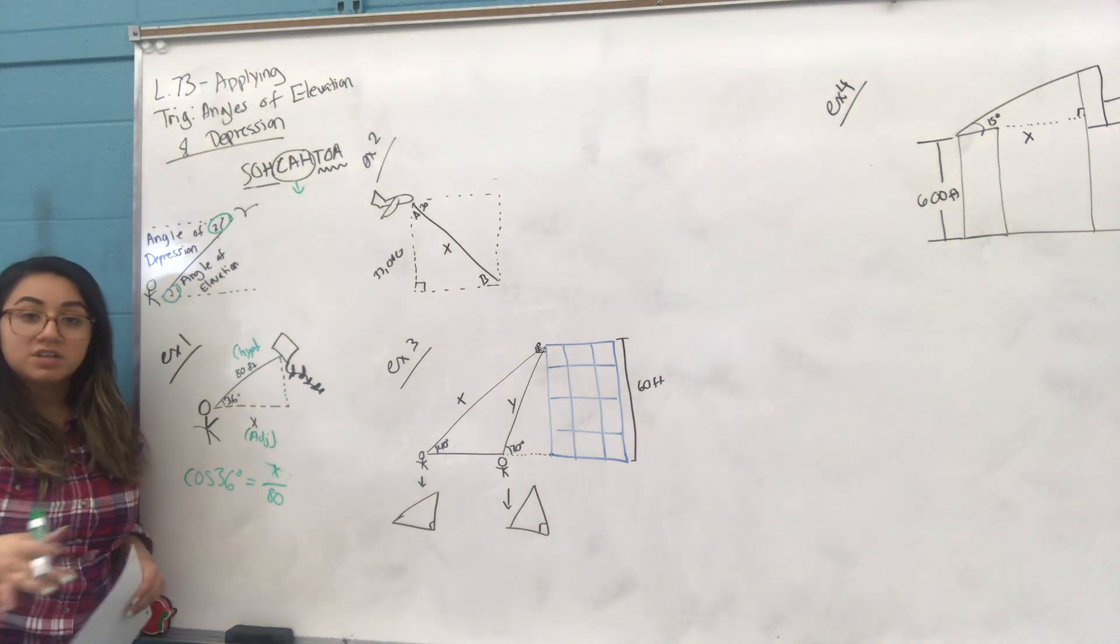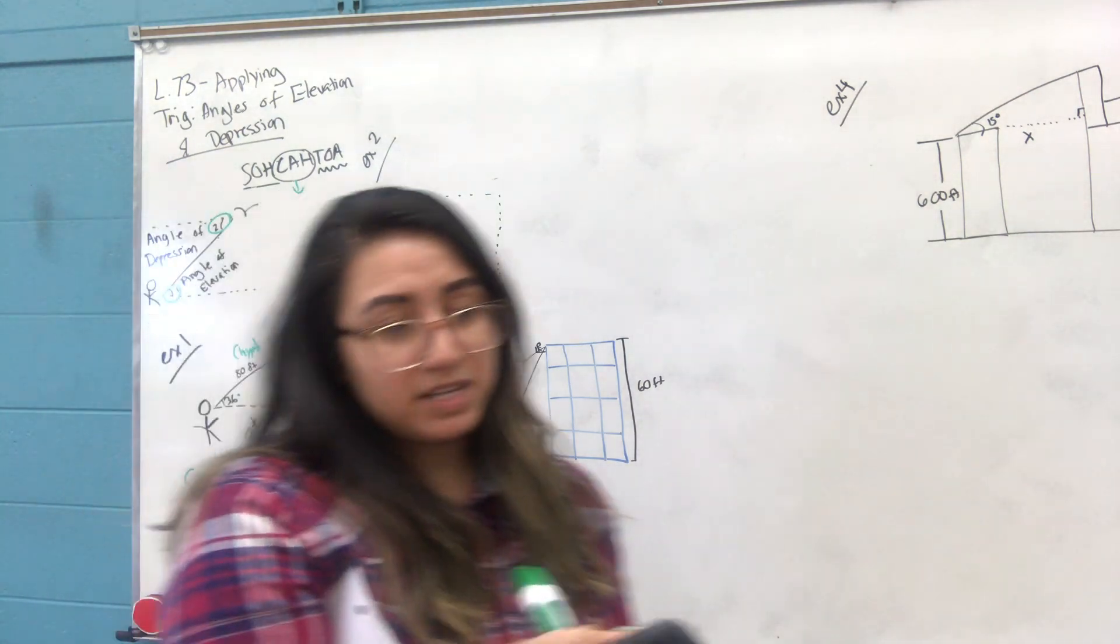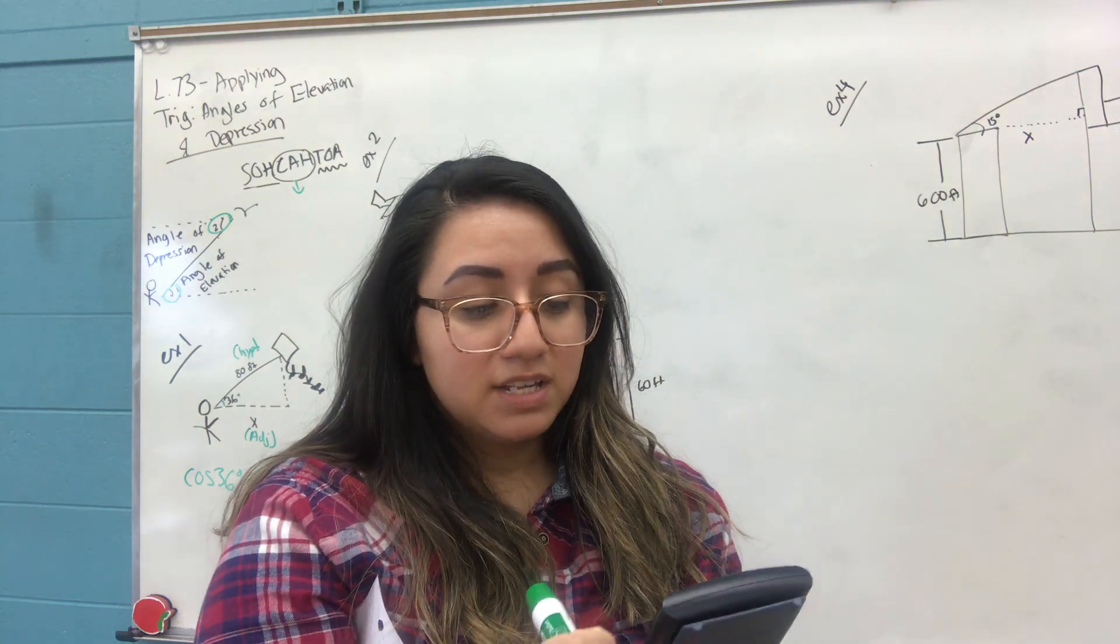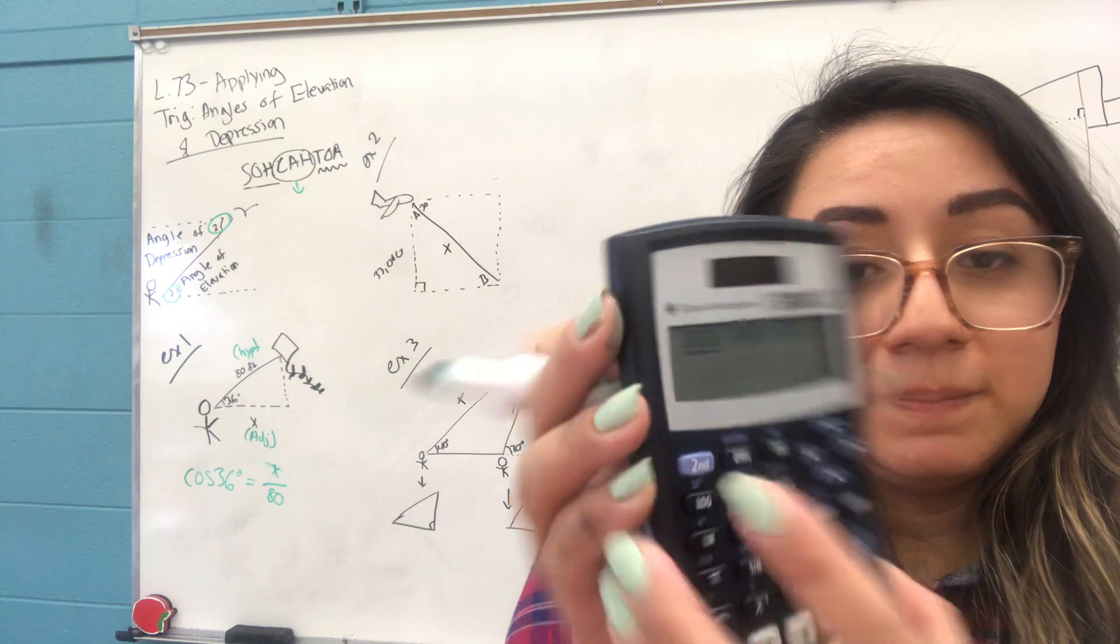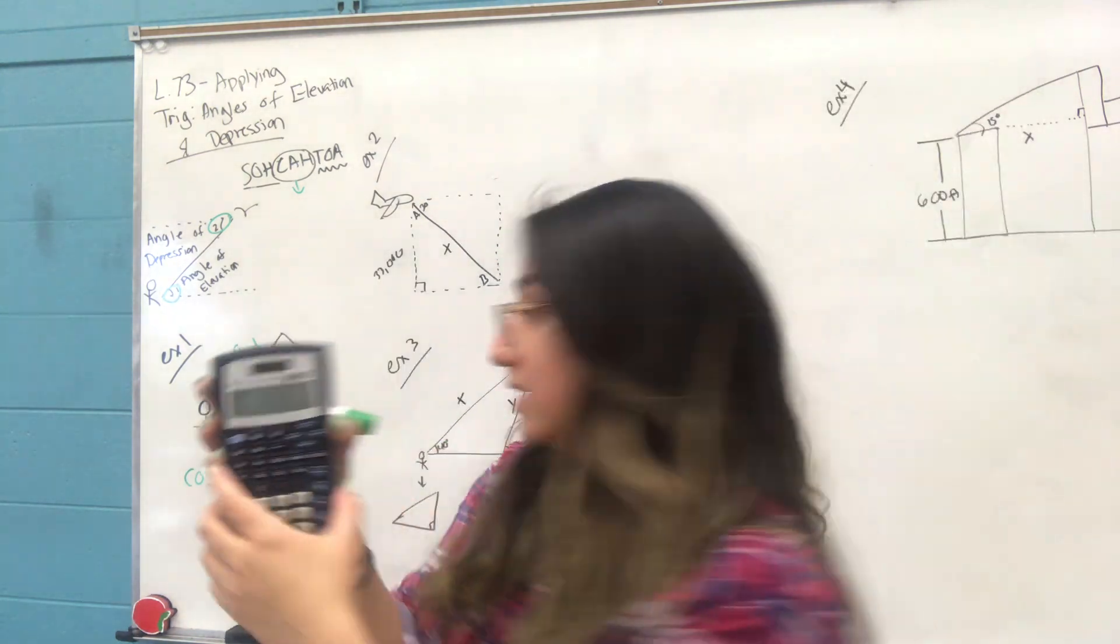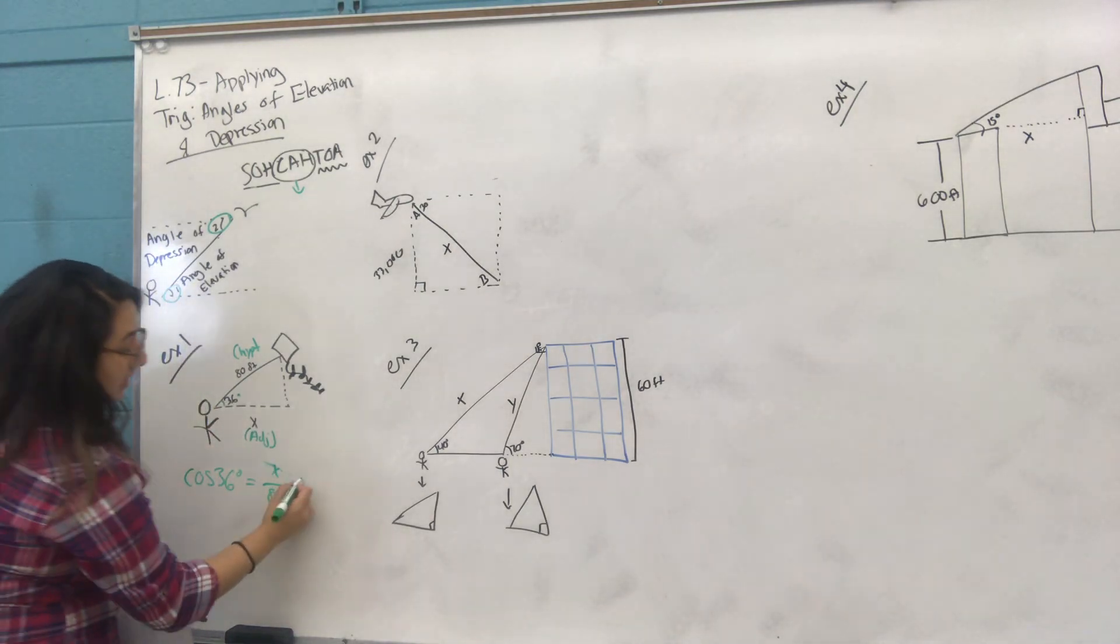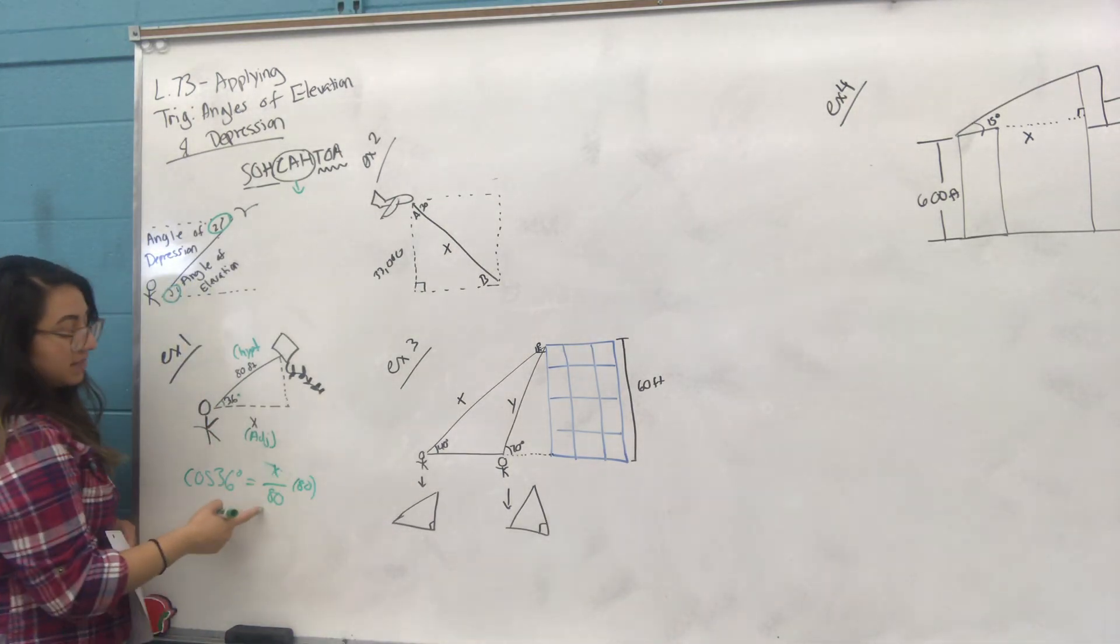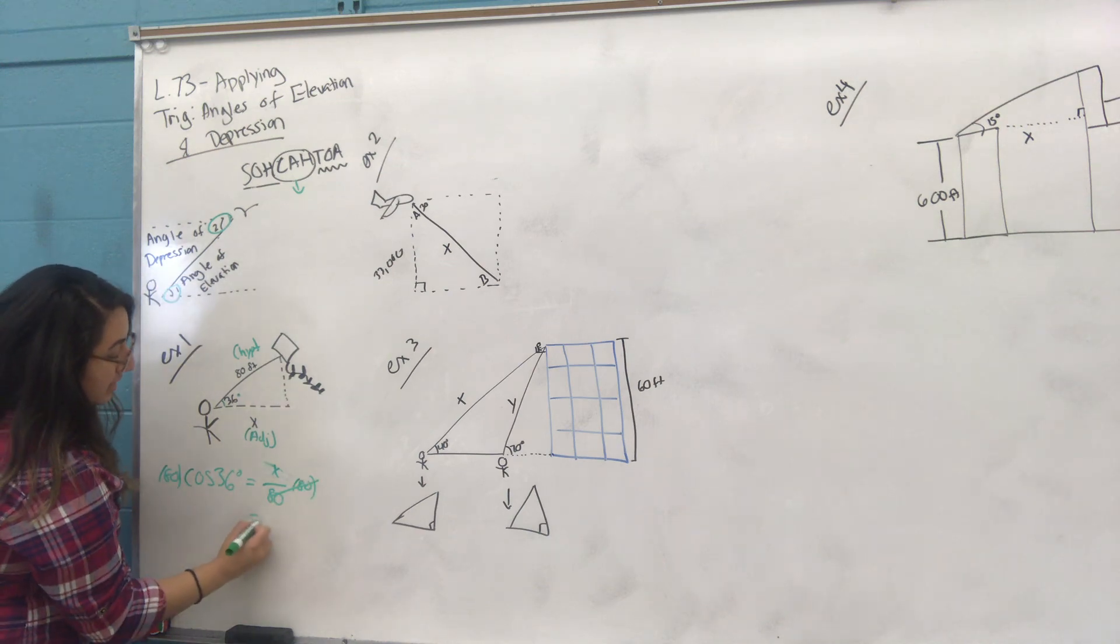After that, we solve for x. Make sure you have your calculator in front of you in degree form. To find x, we have to get x by itself. 80 is dividing x, so we multiply both sides by 80.